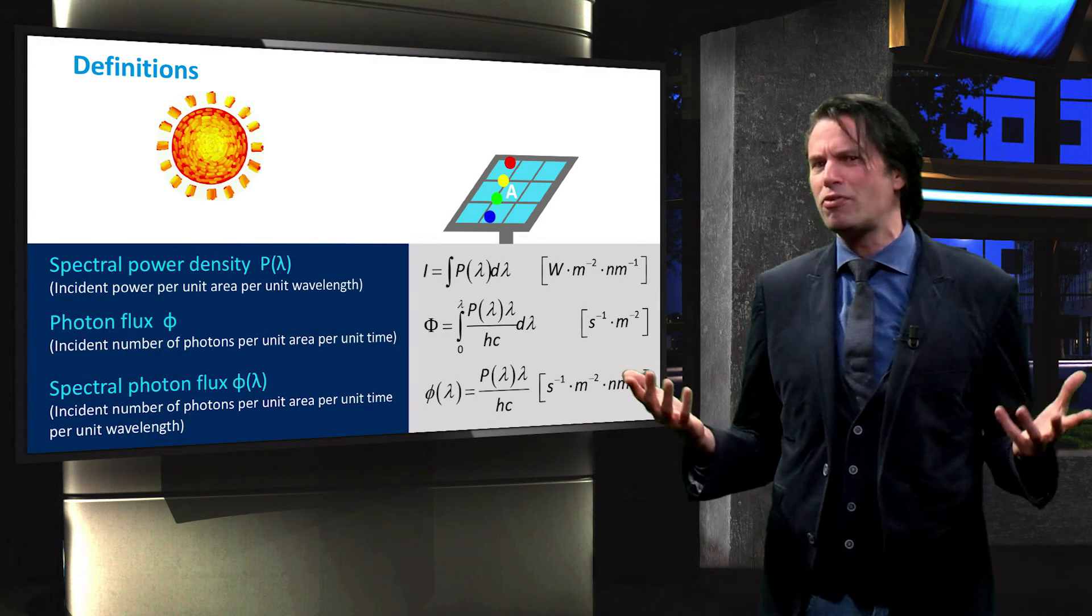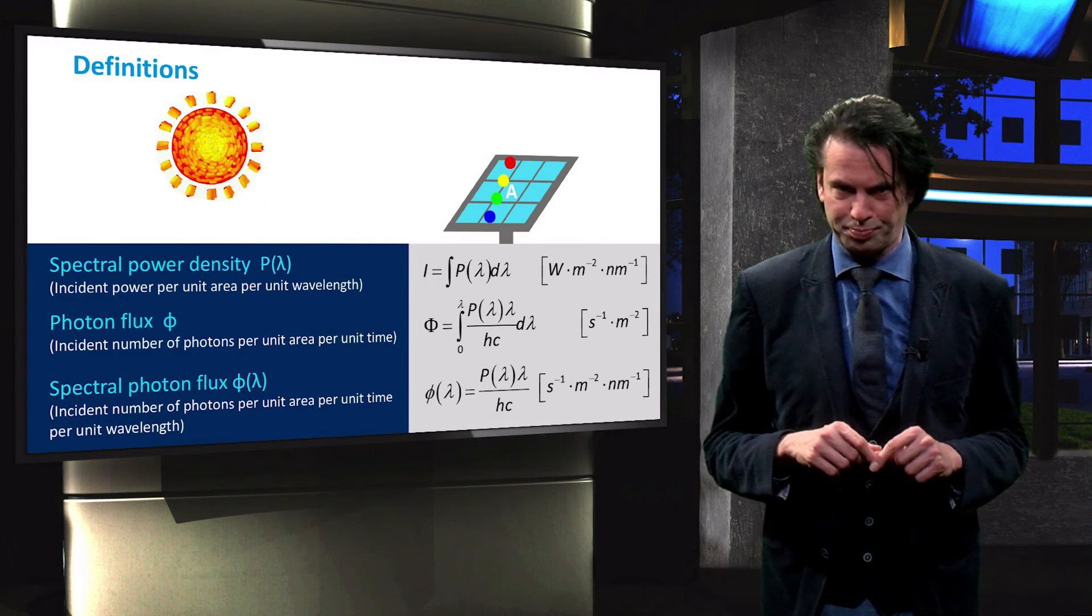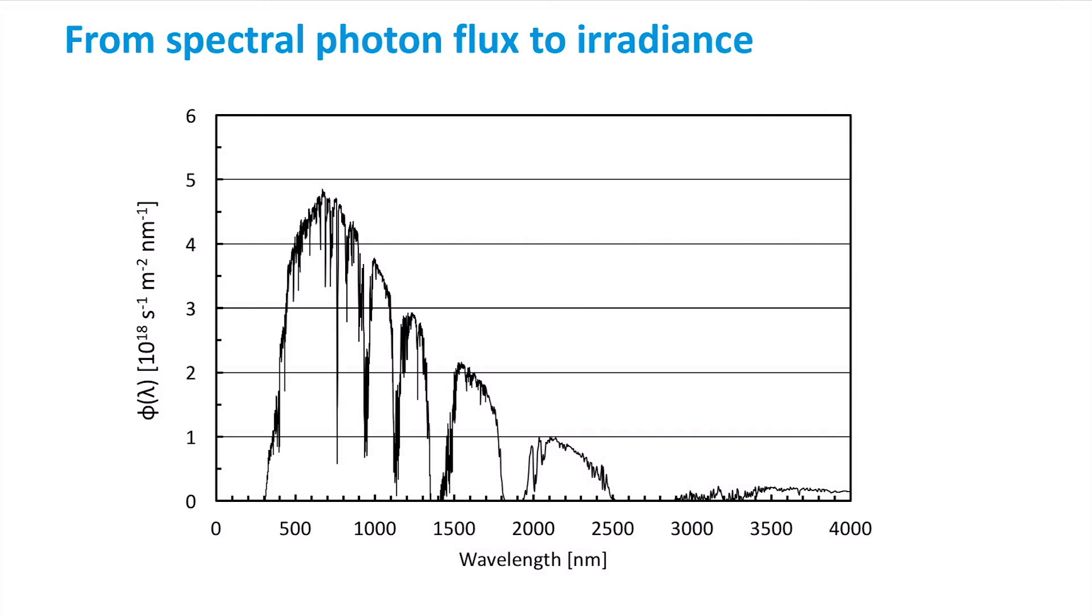Let's try to visualize these definitions of light incident on a surface. If we start with the AM1.5 spectral photon flux that is emitted by the sun and incident on the surface of the earth. The spectral photon flux is given in 10 to the power 18 photons per second per square meter per nanometer.